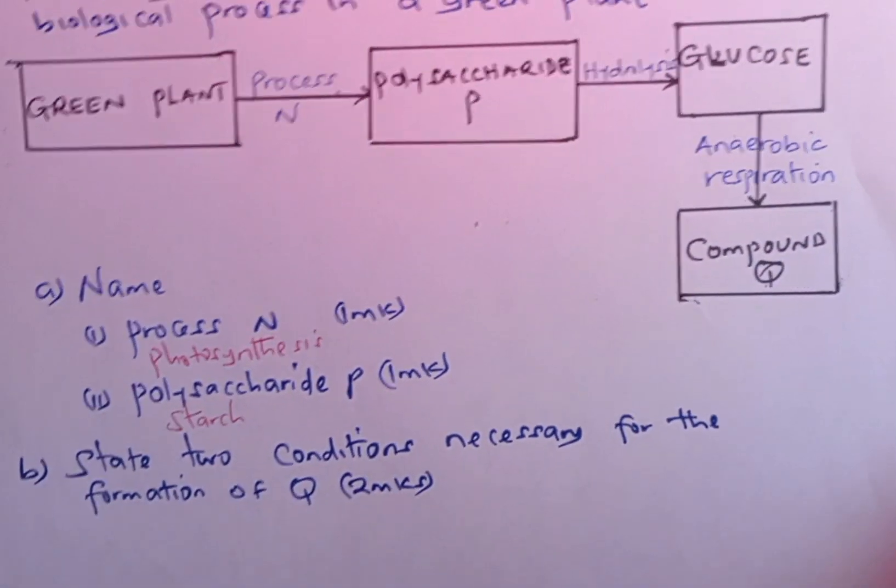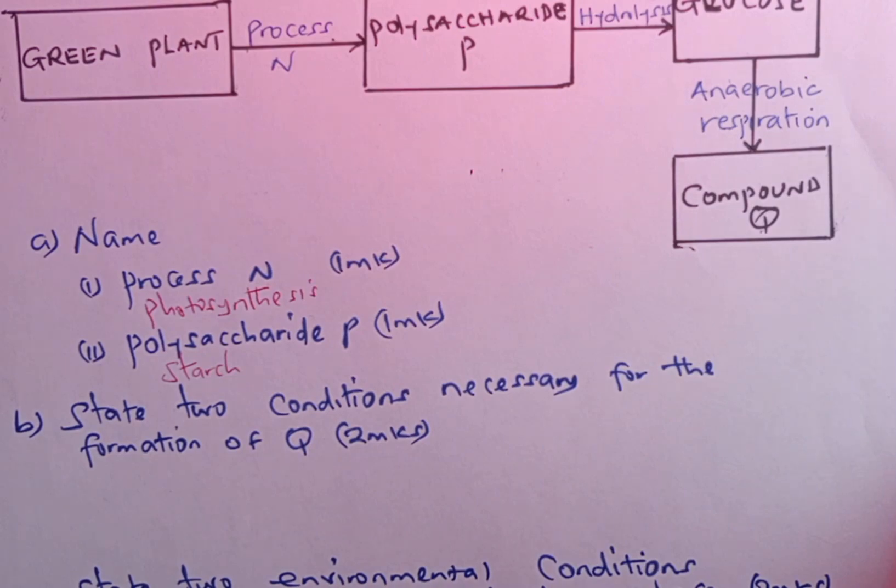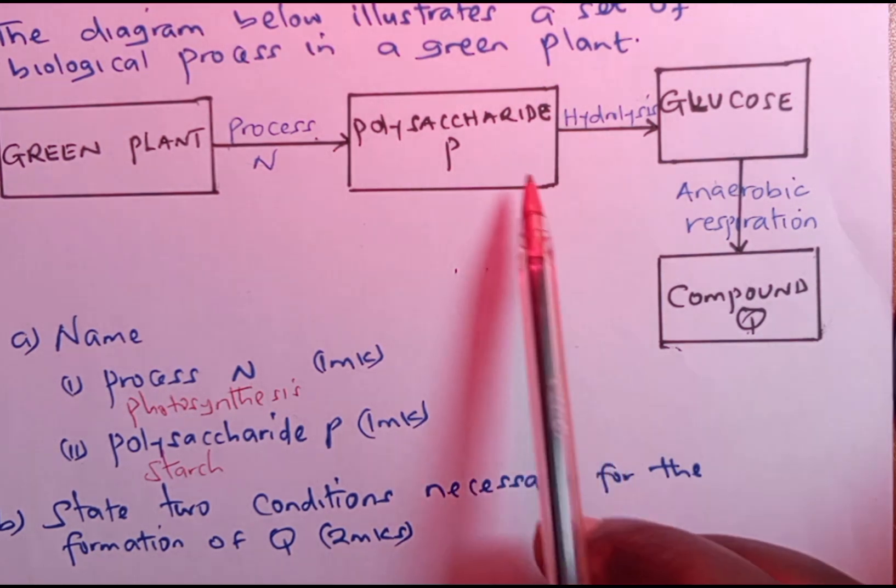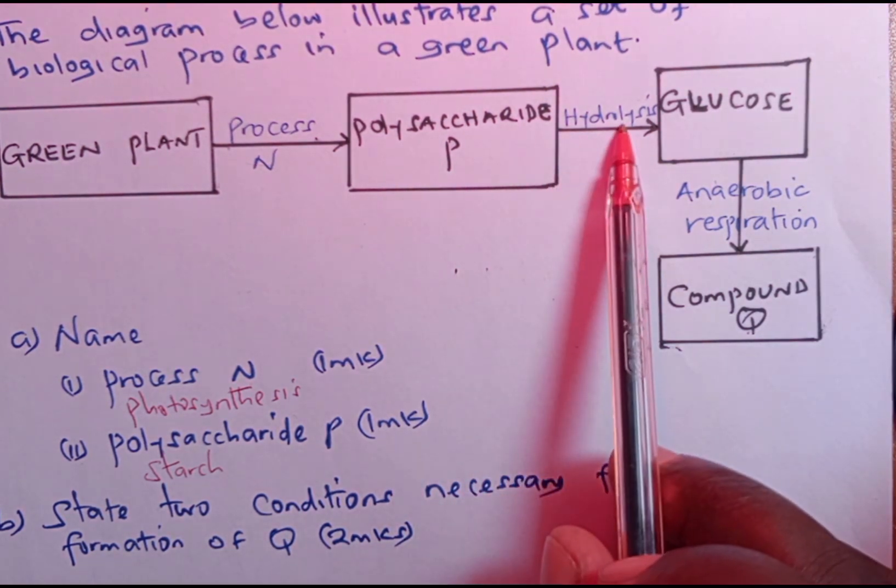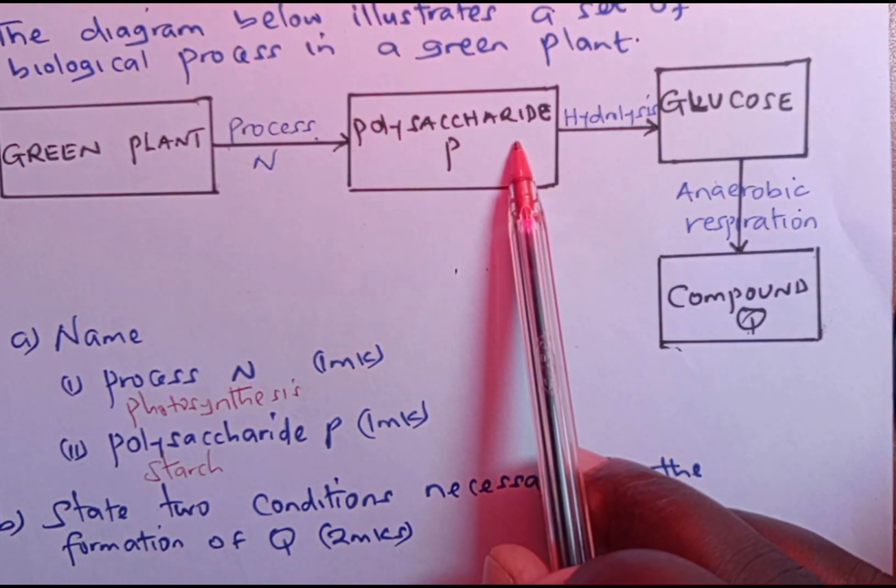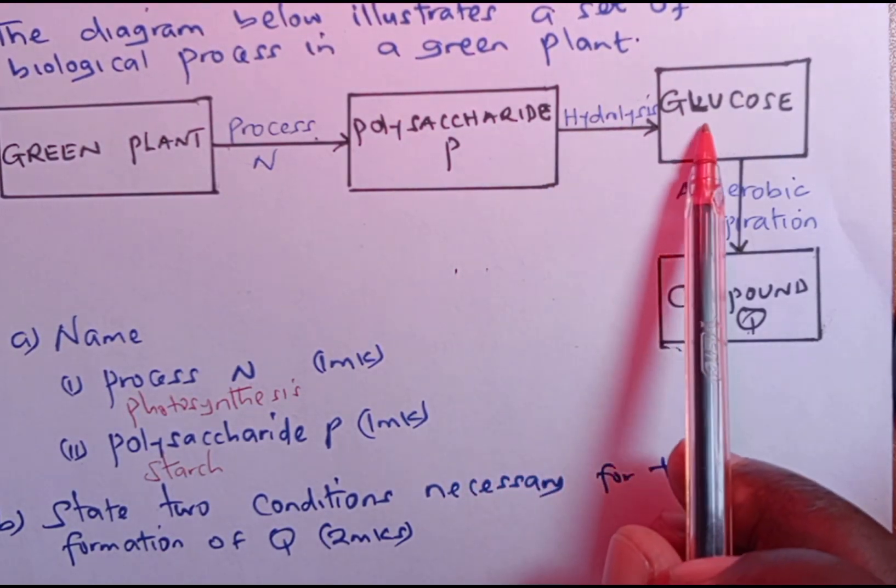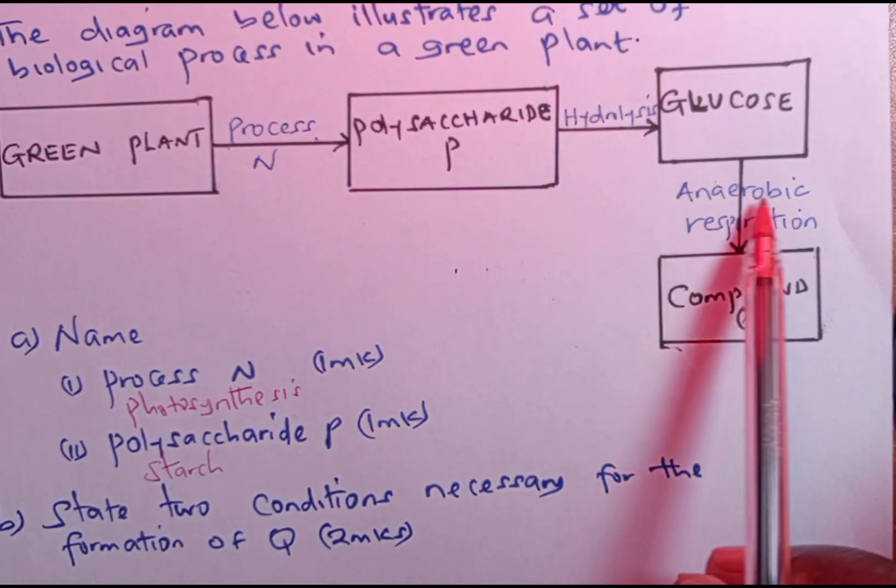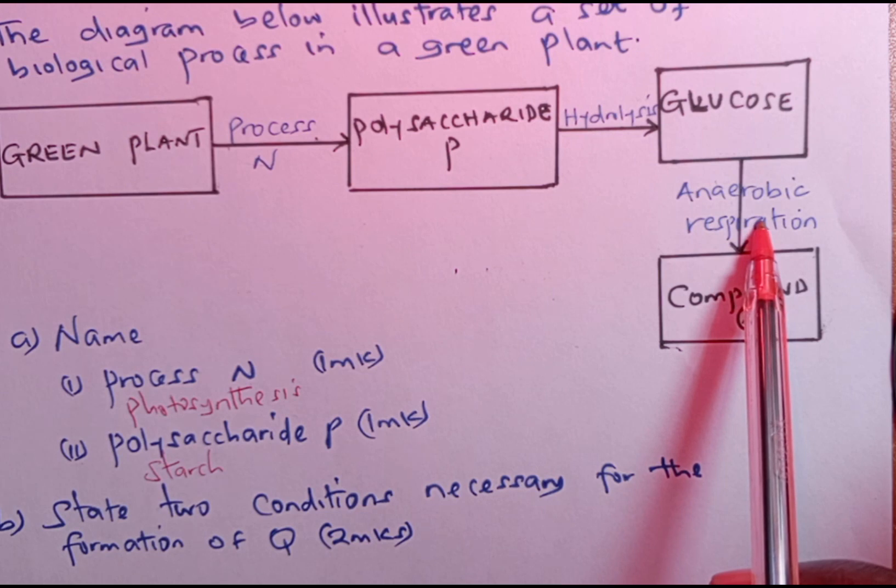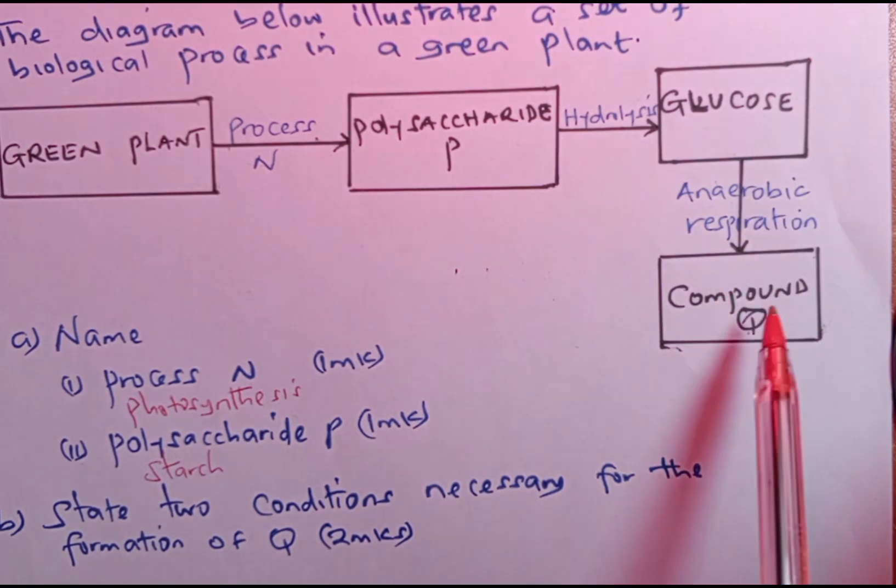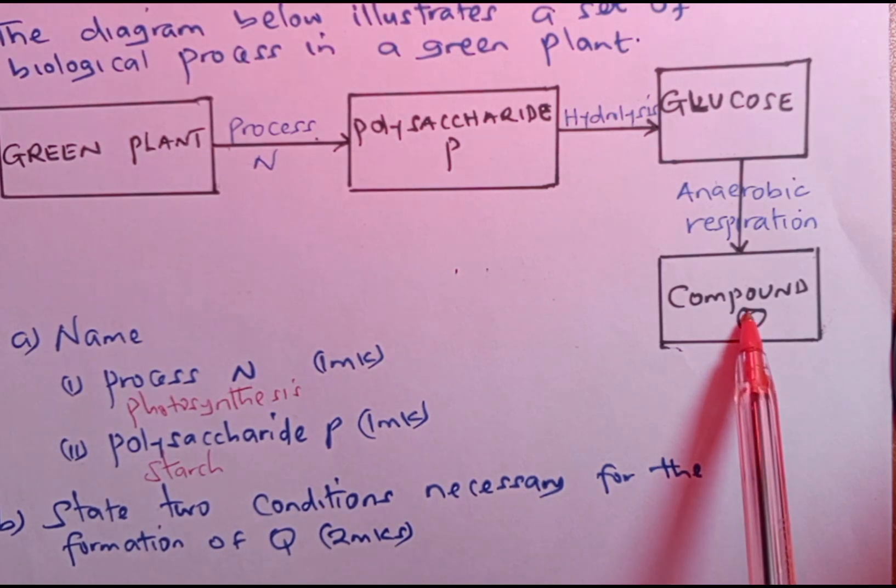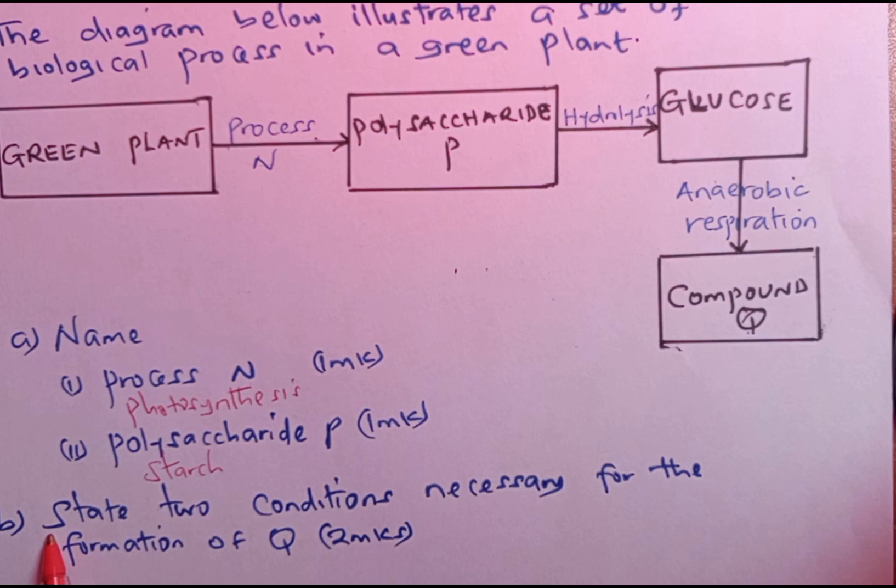We move down to part B of that question. Remember, the polysaccharide P undergoes hydrolysis, which is the breakdown of the complex carbohydrate, which is starch into glucose. Then glucose undergoes anaerobic respiration, which is the oxidation of food without the use of oxygen, forming a compound in plants, which we call pyruvic acid.